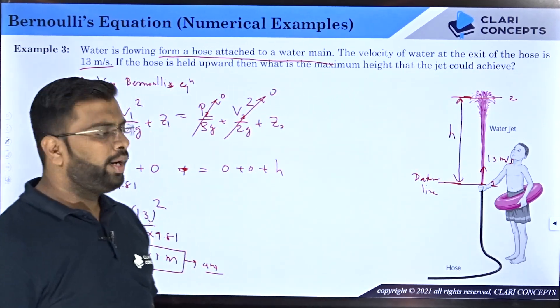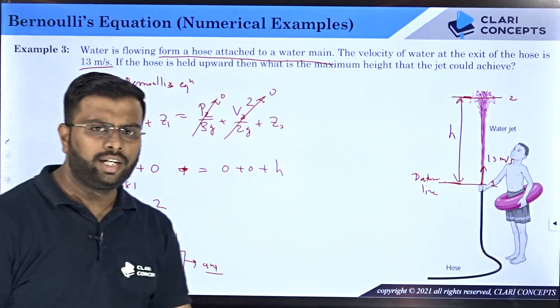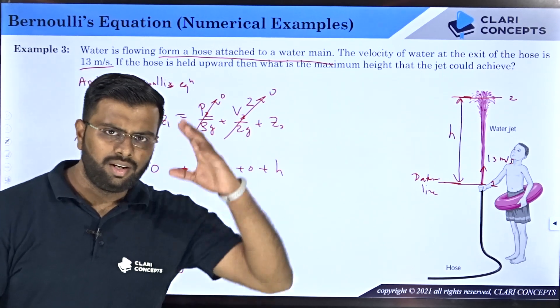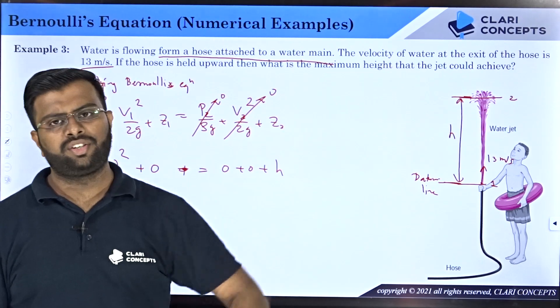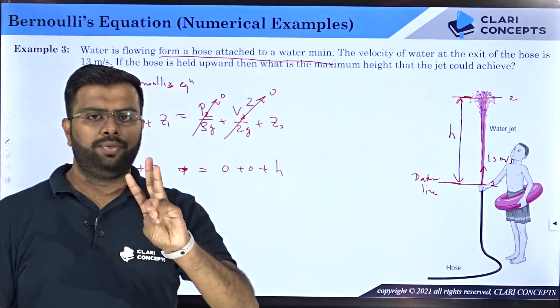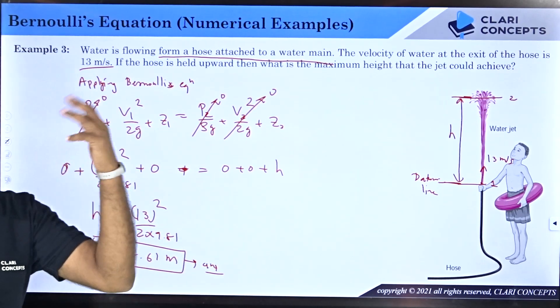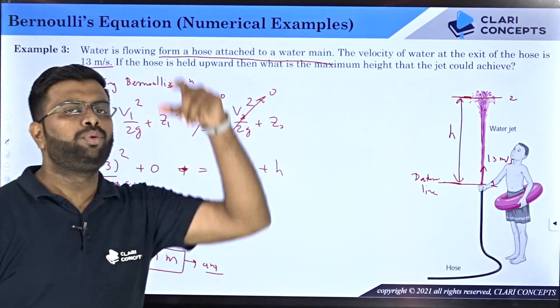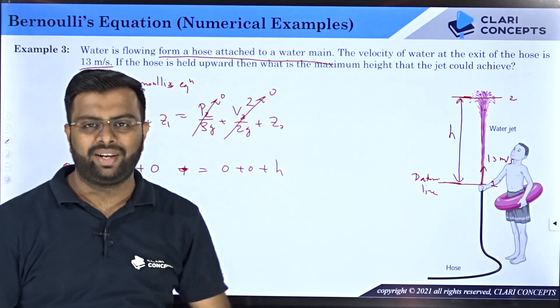So when the jet is held vertically up, the water will go up to 8.61 meters. Can you imagine? From floor to ceiling of a residential building is three meters, so 8.61 is almost three times that. The jet can go up to the top of a three-story building and then come back at this velocity of 13 meters per second.